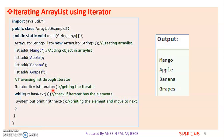While itr.hasNext(), check if itr has the element. Check the other element. First loop through using itr.next() to retrieve each element.